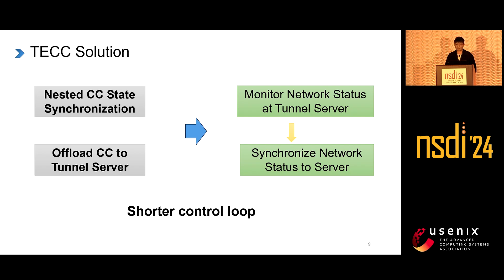A good way to resolve nested congestion control is to synchronize the two congestion control states. We choose to synchronize the congestion control states of the tunnel connection to the end-to-end connection. Moreover, the control loop of the tunnel connection is shorter, and congestion detection is more accurate, which is especially suitable for frequently changing mobile networks.